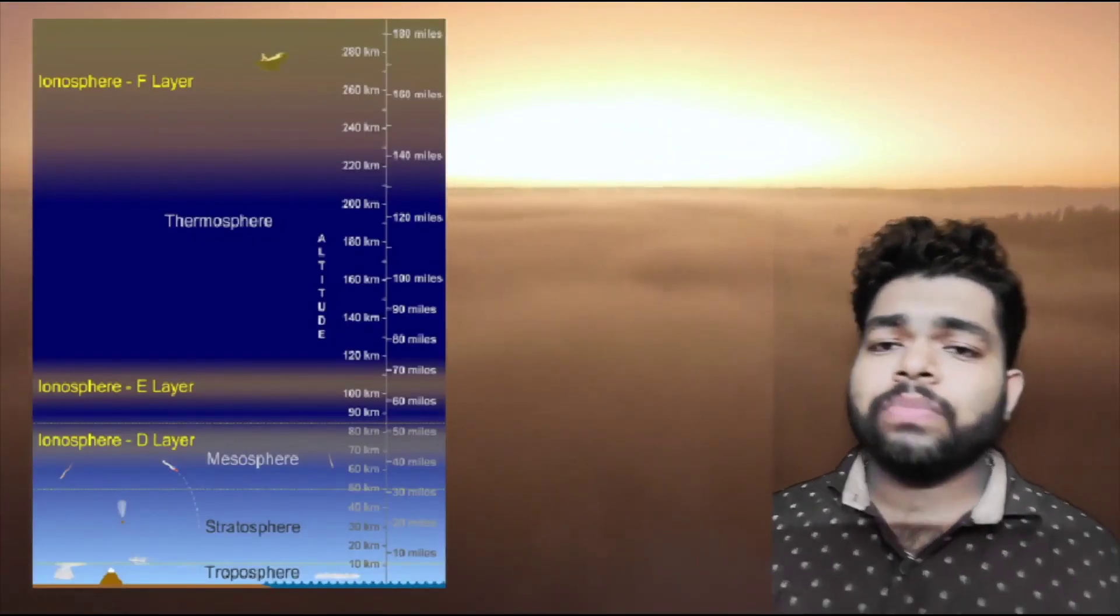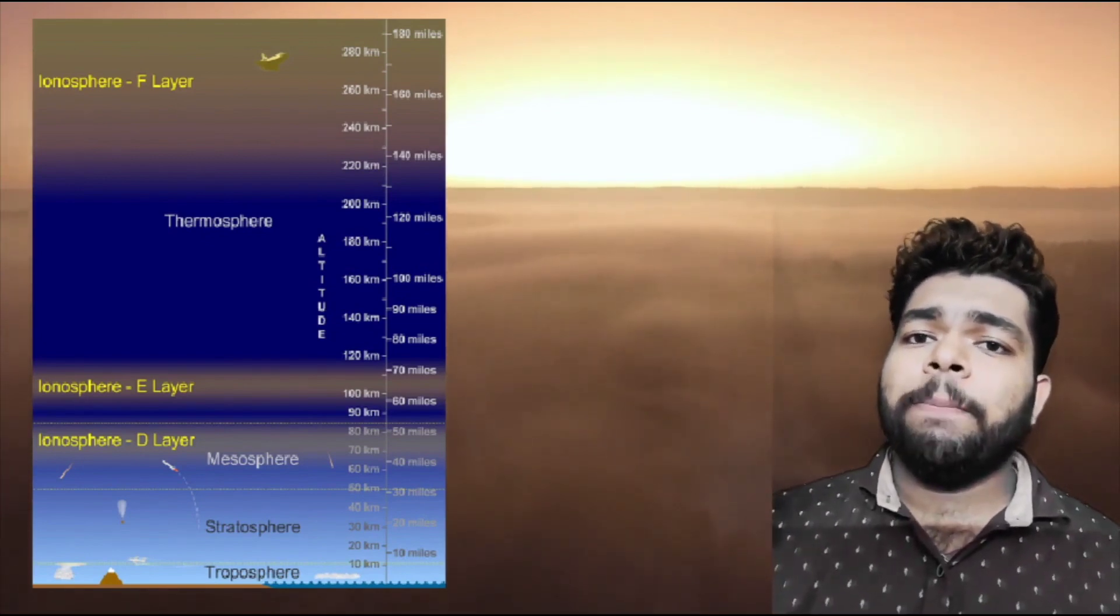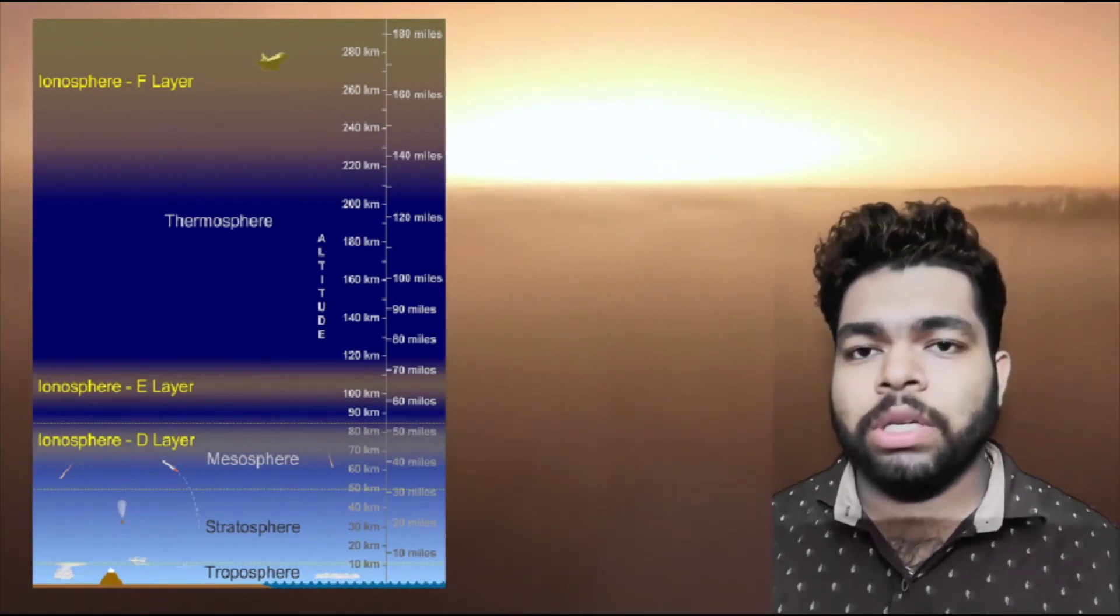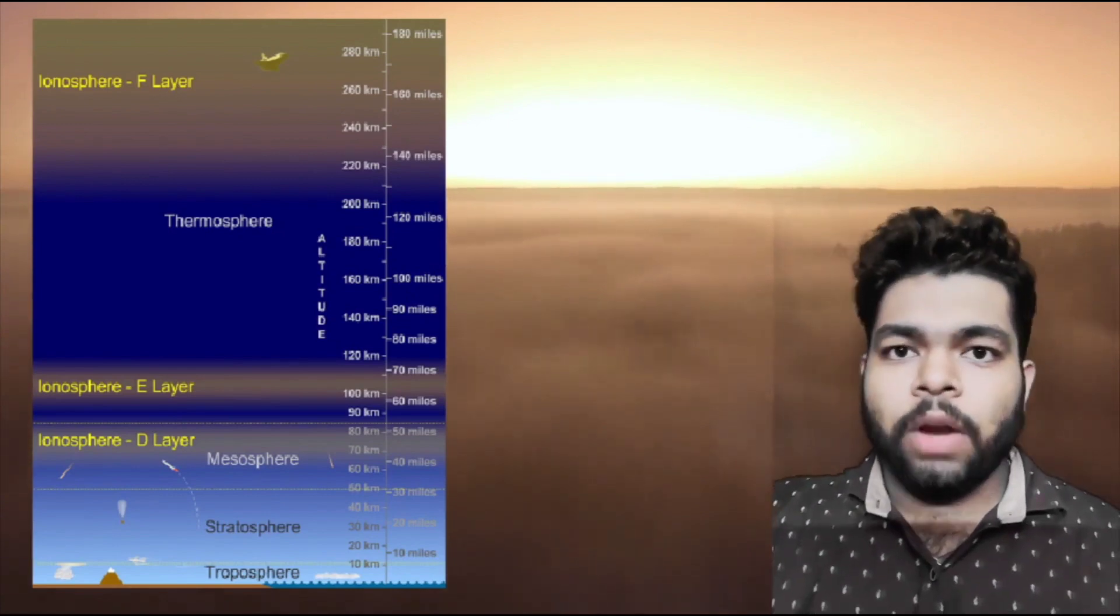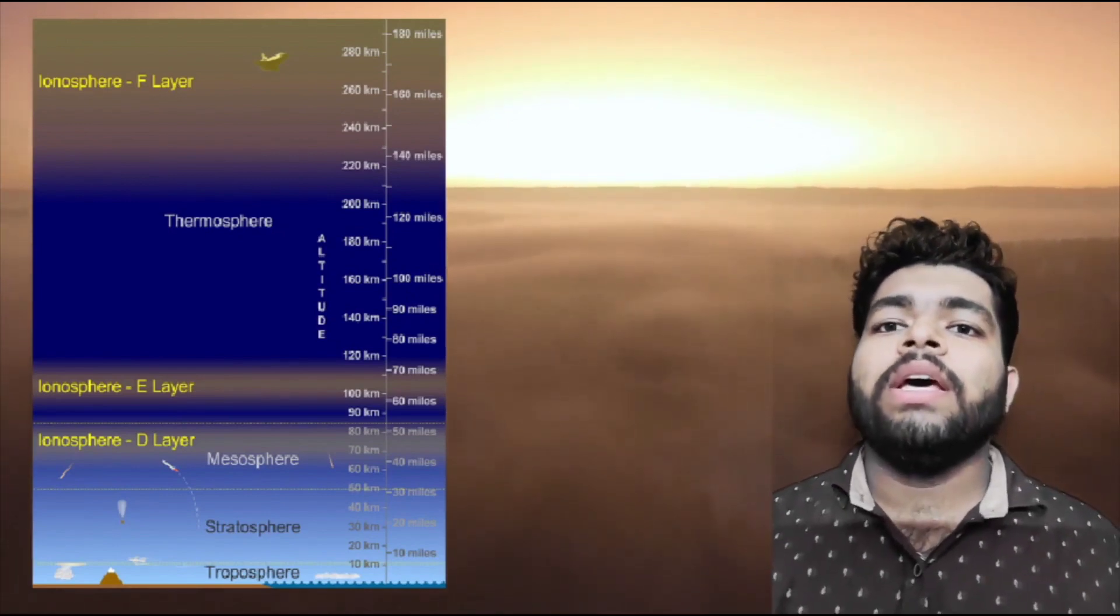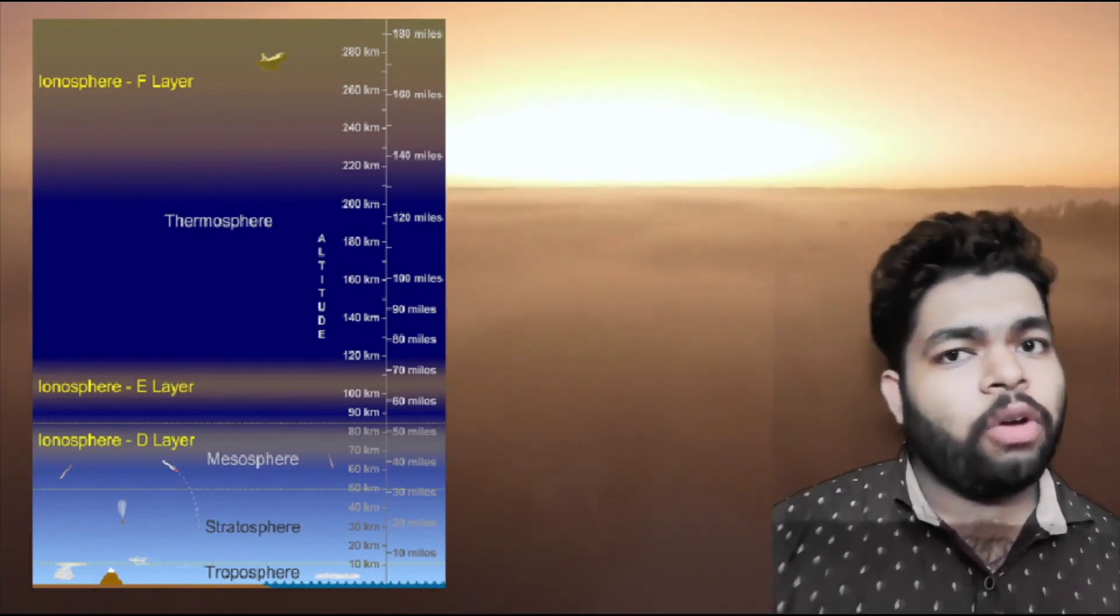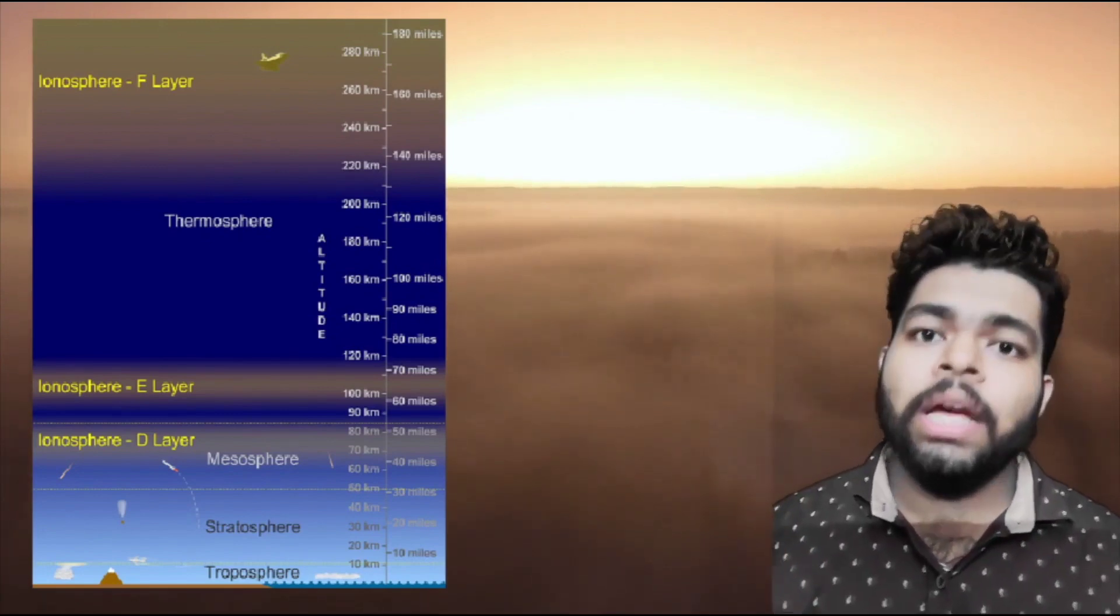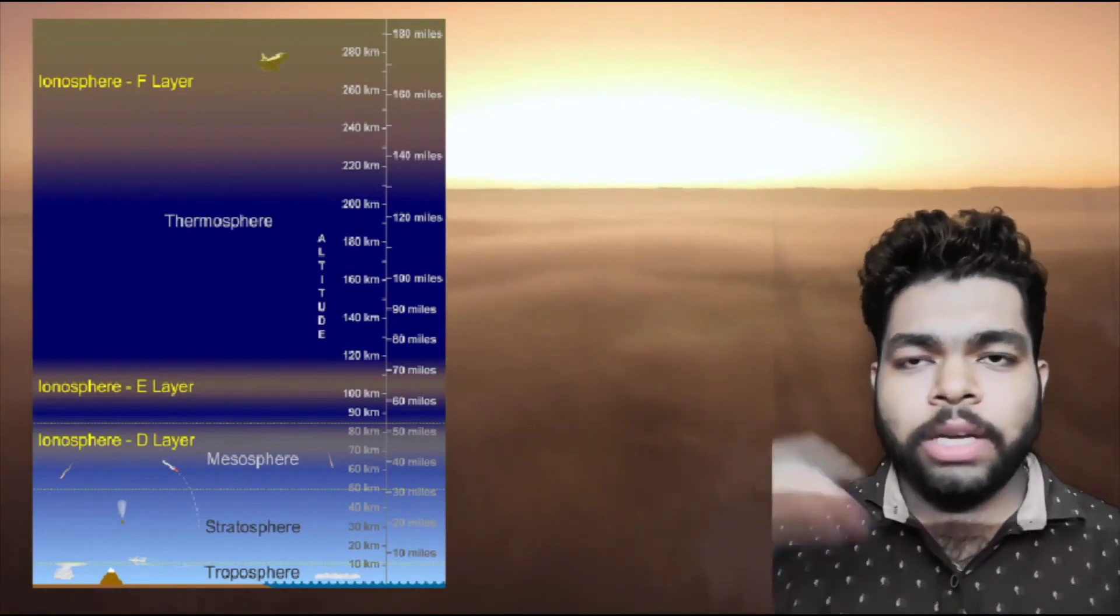In the troposphere, with the increase of height, the percentage of gas components in the air remains constant, water vapor components decrease when height is increased, and temperature decreases with height. The stratosphere is the second major layer of Earth's atmosphere, just above the troposphere and below the mesosphere.